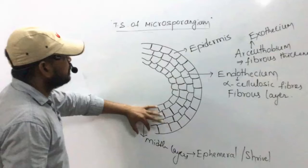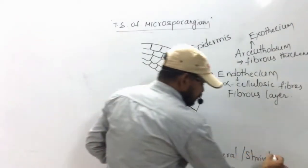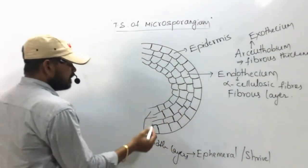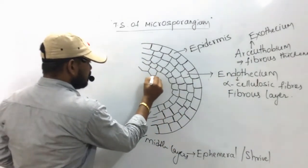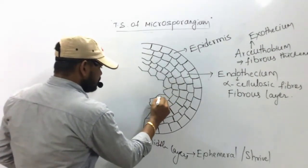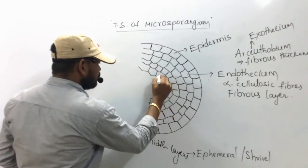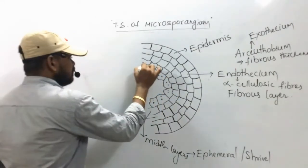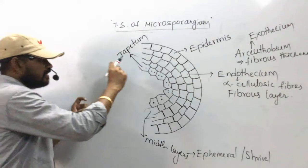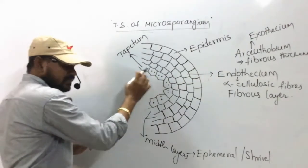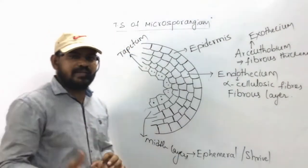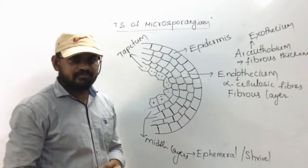Below the middle layers, we can see cells called tapetum cells. Tapetum cells have more than one nucleus. The tapetum surrounds the sporogenous tissue present in the center and is involved in the nourishment of developing pollen grains and microspores.